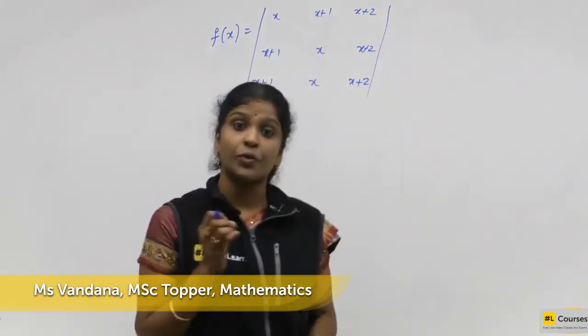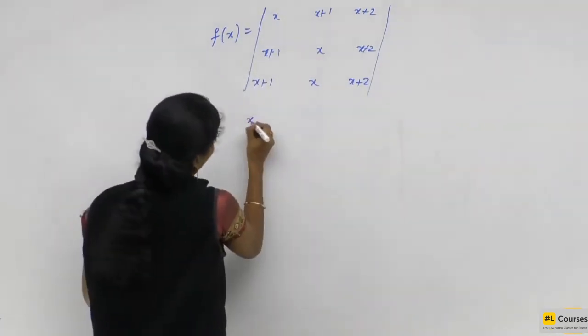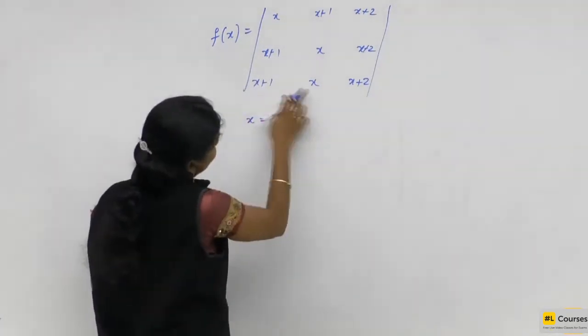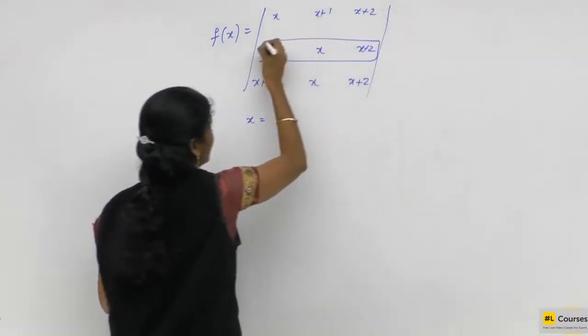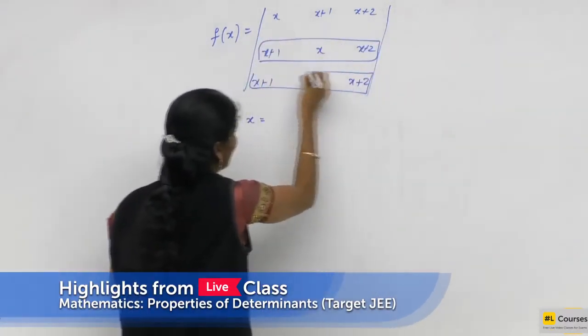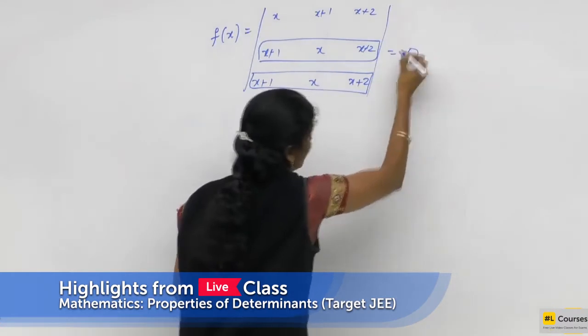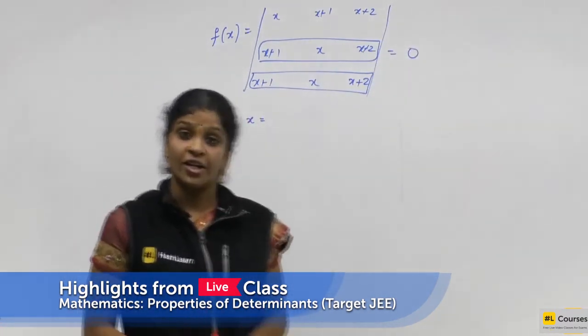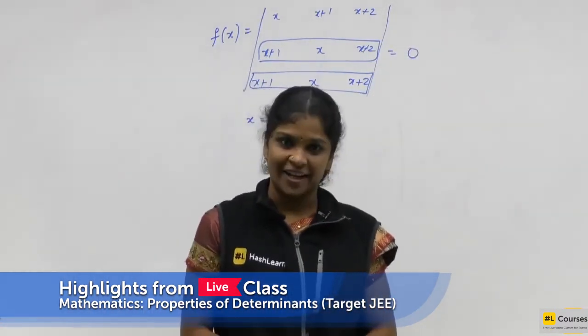If you are substituting x value as something, see these two are same here. Without substituting also, the determinant will become 0 because here two rows are identical.